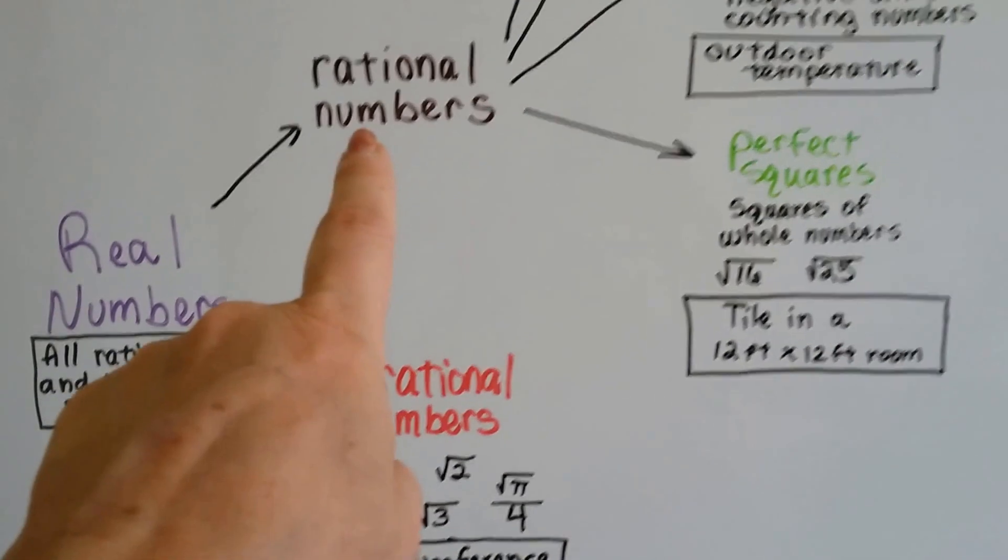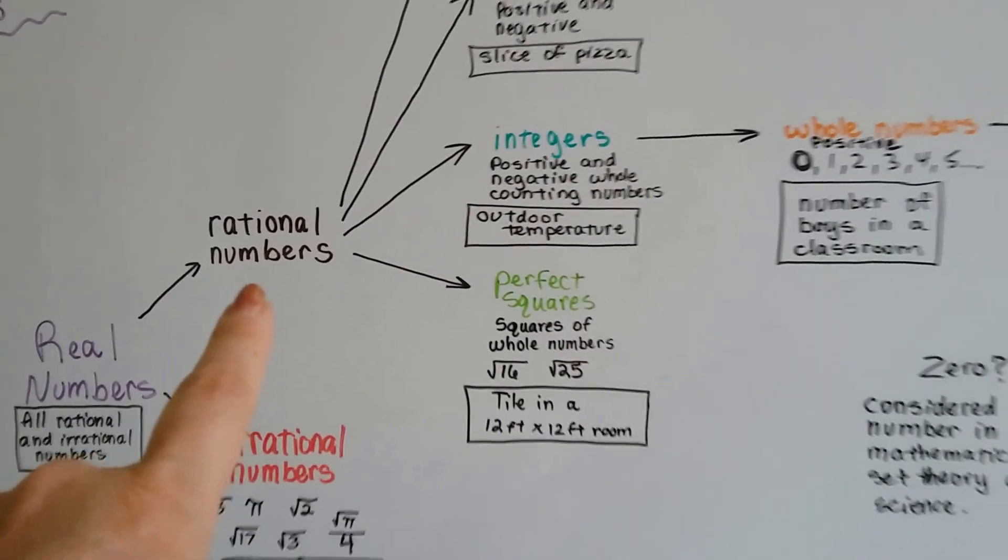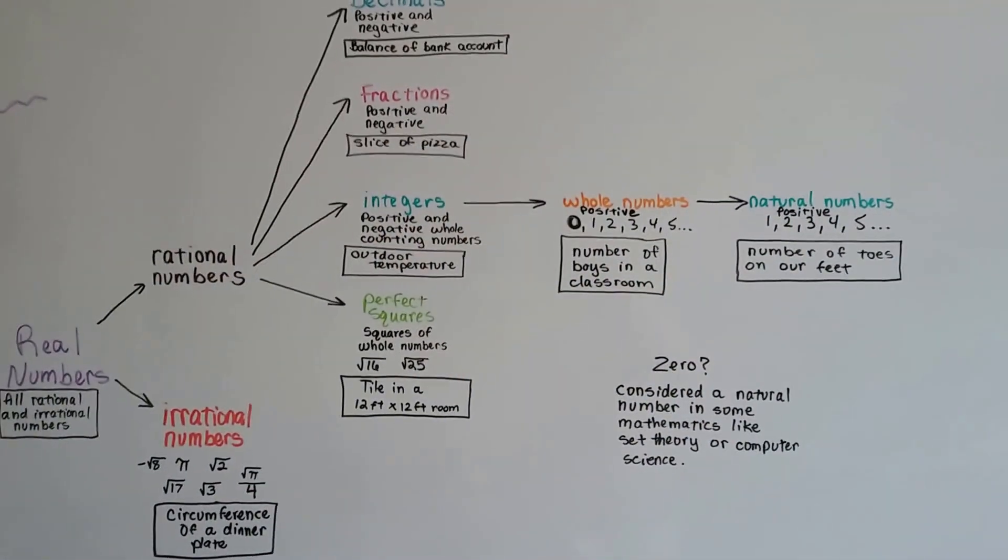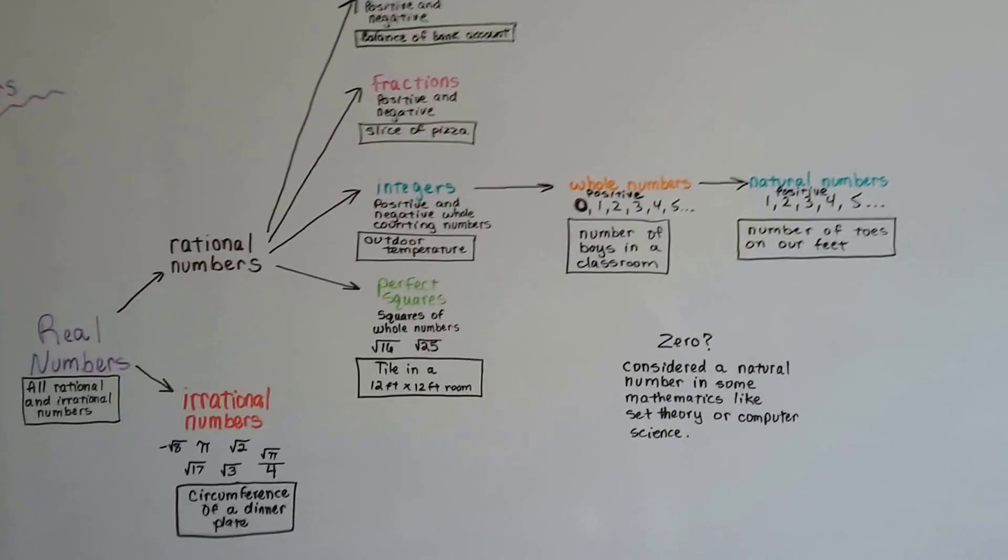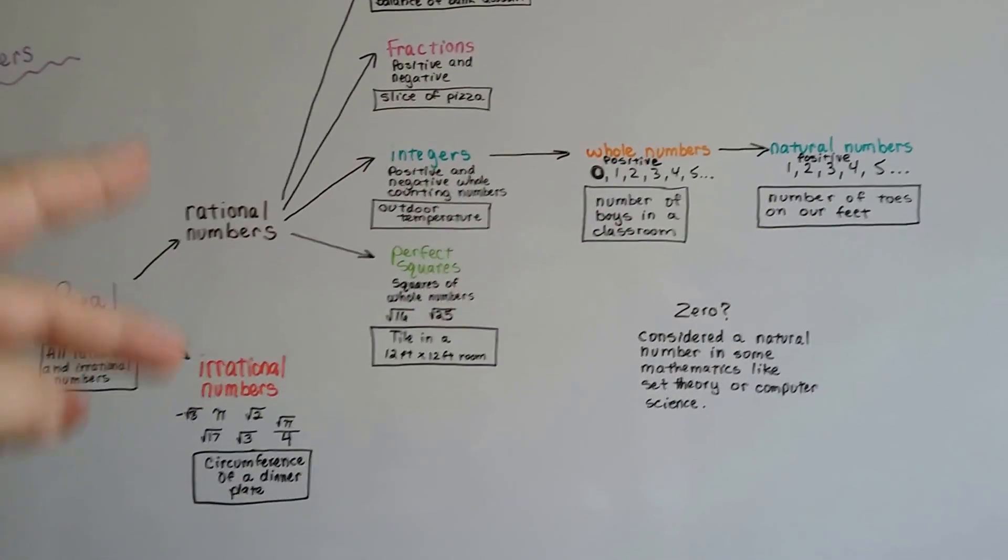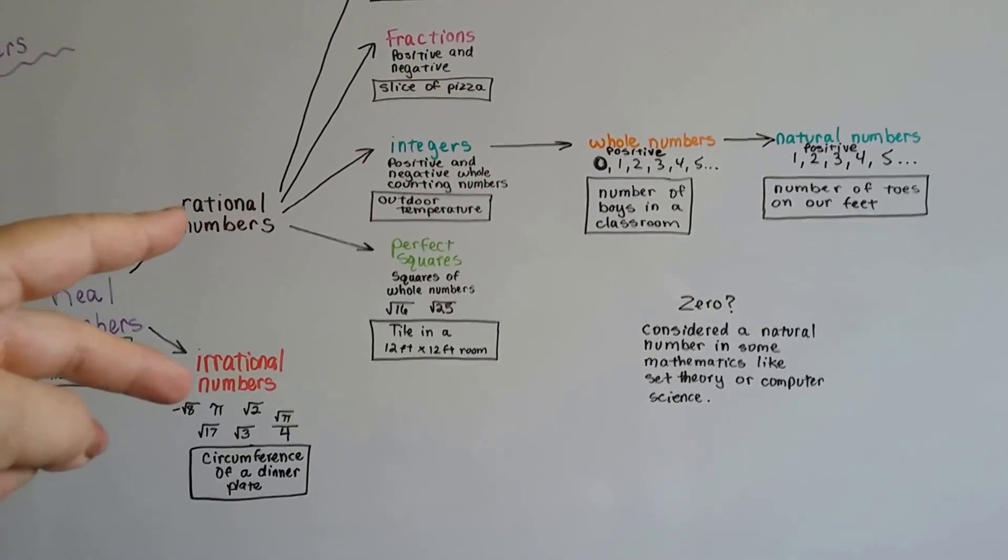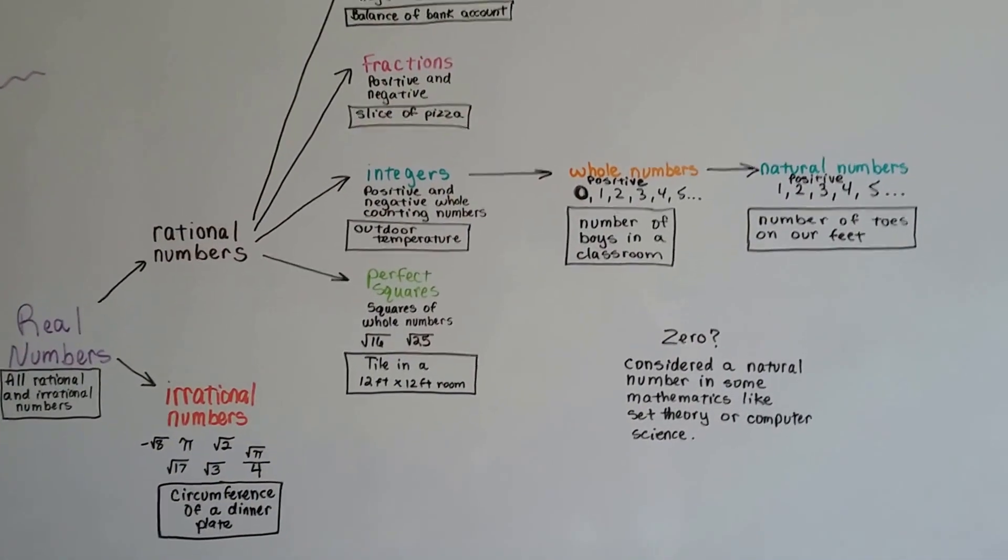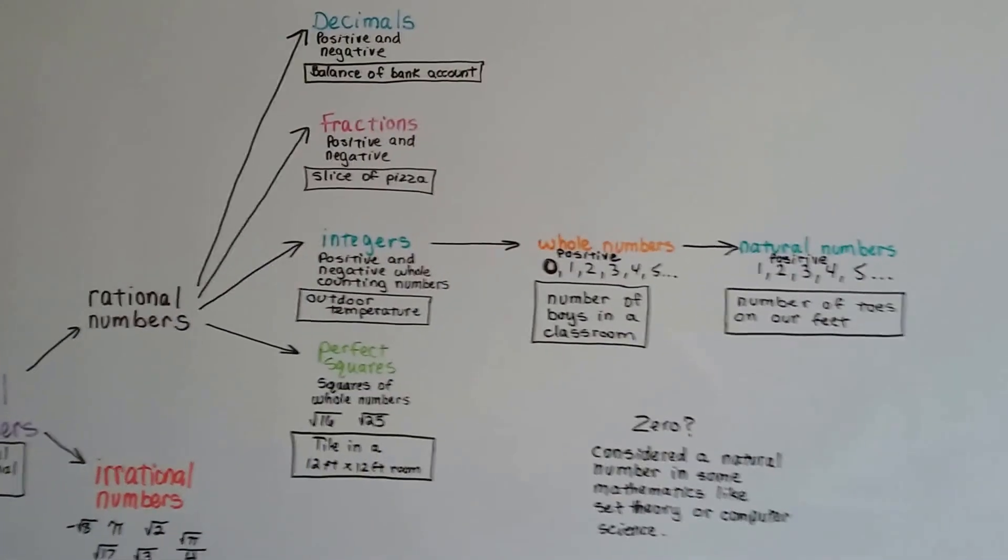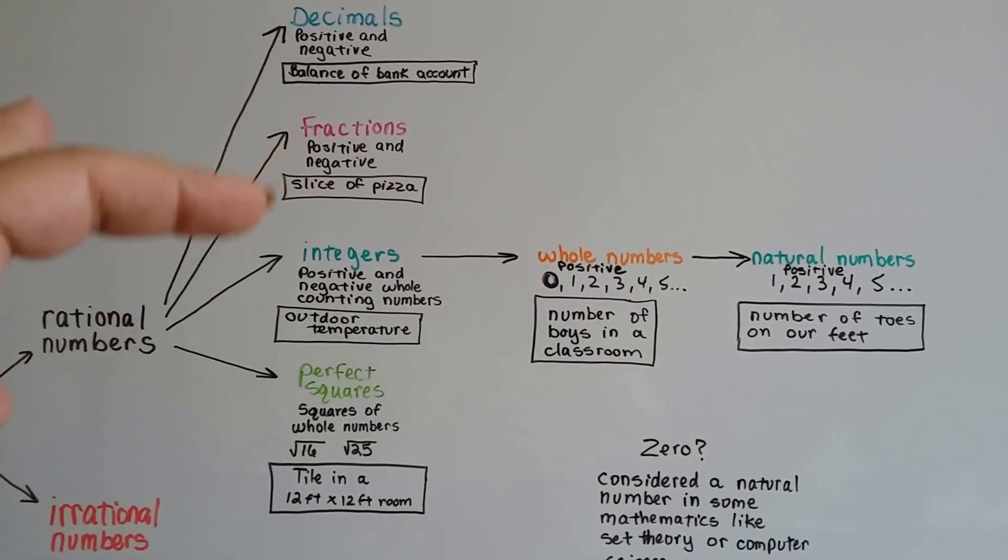So for rational numbers, well look, that's everything else. That's where all the branches start going. So for real numbers, you have either rational or irrational and it stops right here. Now for the rational numbers, we've got decimals, fractions, integers, and perfect squares.